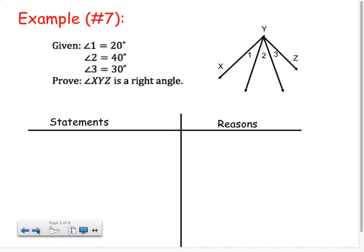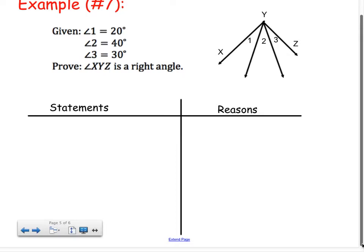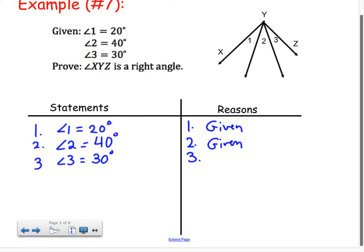So, let's try another one. Again, another kind of simple proof, but let's use our references when we do this one as well. First thing we're going to do is state our given information. The first thing we're given is angle one equals 20 degrees, angle two equals 40 degrees, and angle three equals 30 degrees, and these are all given. Now let's look at what we're trying to prove. We're trying to prove that angle XYZ is a right angle.